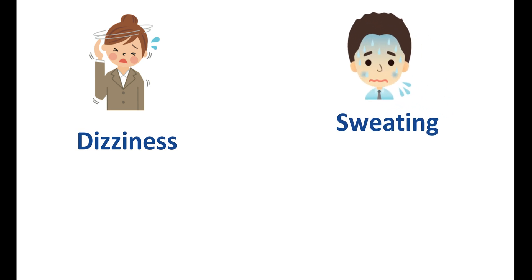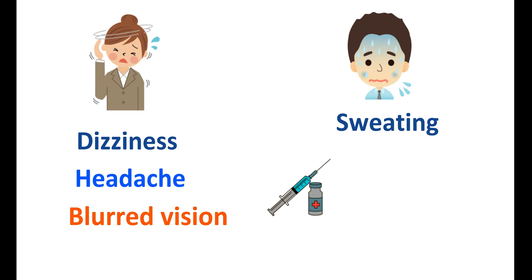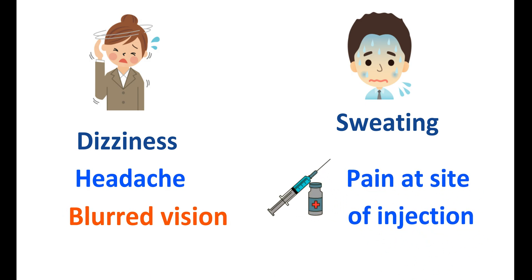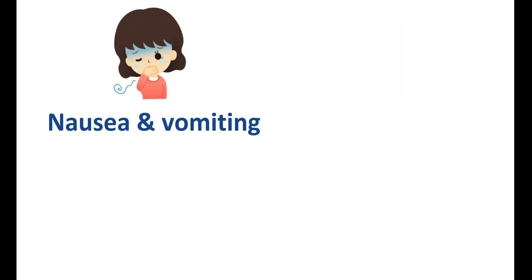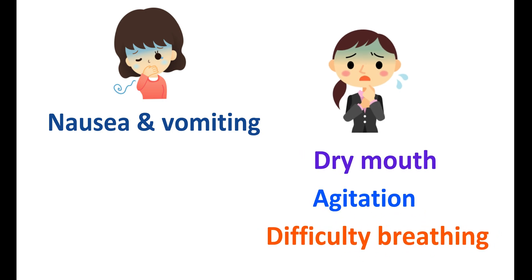One of the important side effects of Flumazenil is dizziness. It can also increase sweating in people. Other side effects like headache and blurred vision can also be observed. Since it is given by IV route, pain at the site of injection can also be observed. It can also produce nausea and vomiting, which is commonly observed. Few other side effects like dry mouth, agitation, and difficulty breathing can also be observed. Many of these side effects are directly related to Flumazenil.